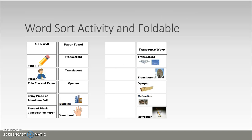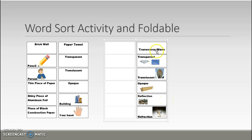The next part of the lesson uses the foldable. This is the front of it, created in Microsoft Word. Students receive it and cut along the lines to separate the front flaps. Inside, they can put simple notes covering transverse wave, transparent, translucent, opaque, reflection, and refraction, with additional space to add further notes.